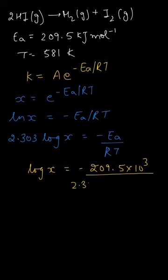In the denominator, we have 2.303 multiplied by R, which is 8.314, and the temperature in Kelvin is 581.